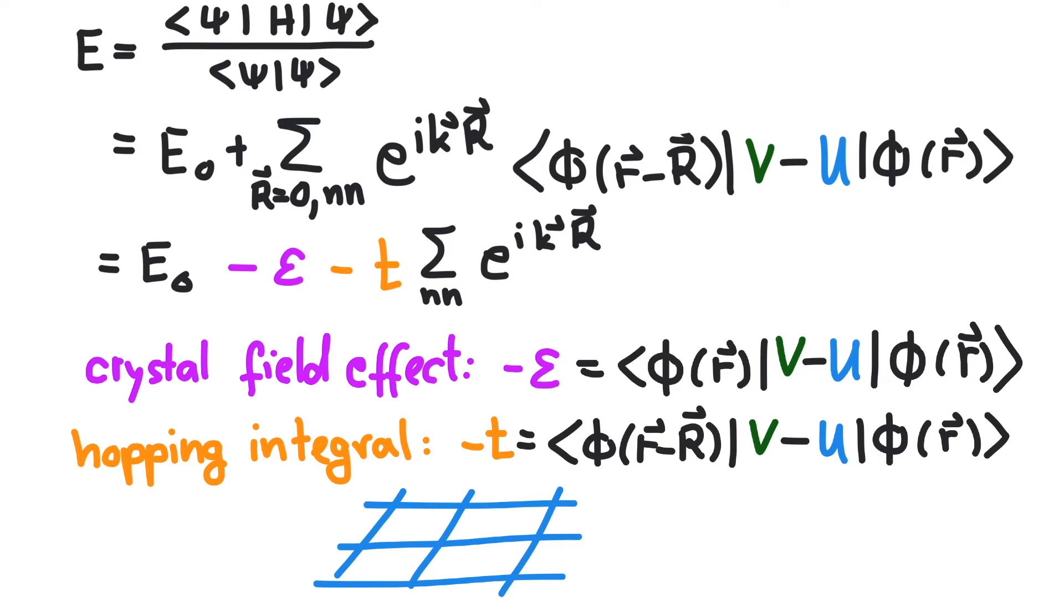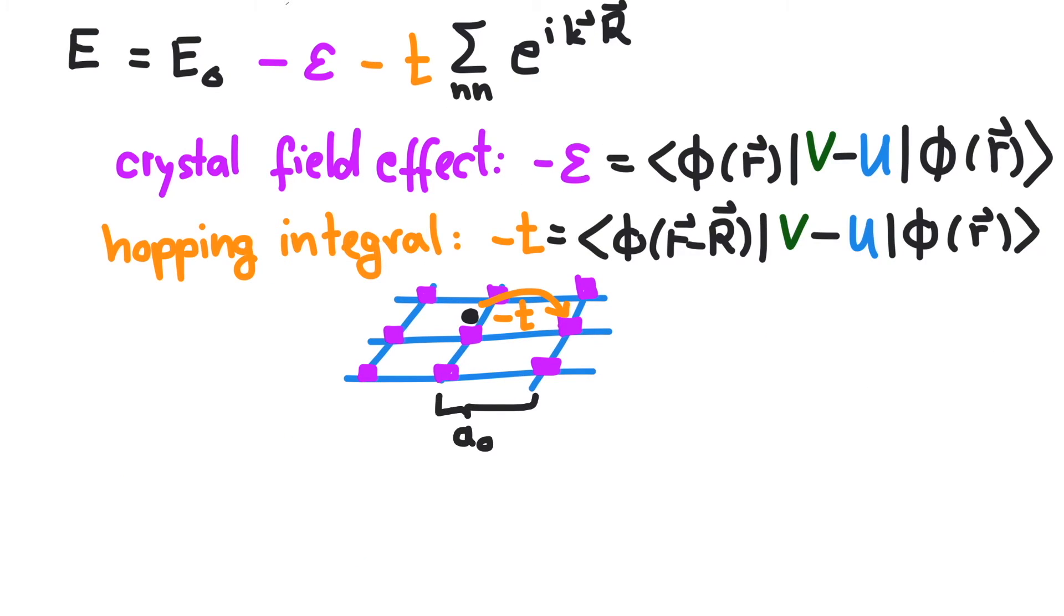If the system is isotropic, so the underlying atomic orbital is an S-wave, the hopping in all directions is equally likely. For a simple cubic lattice with a given lattice constant, we can now write down a dispersion relation.